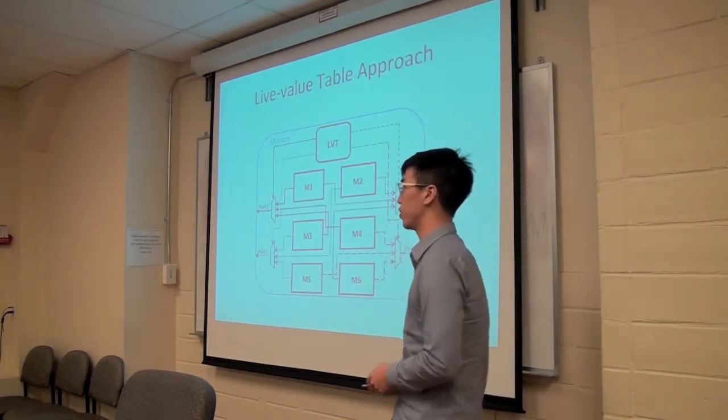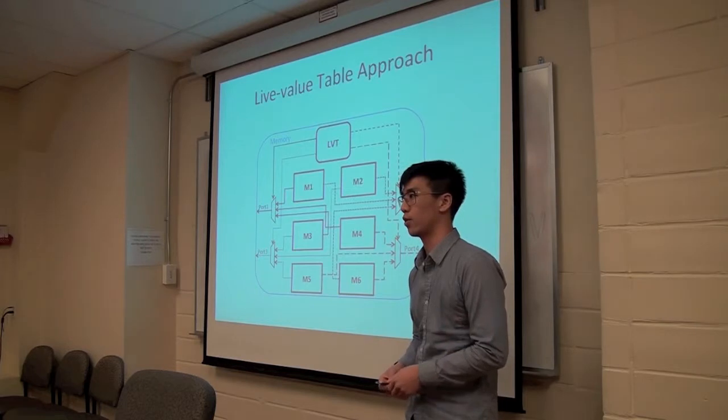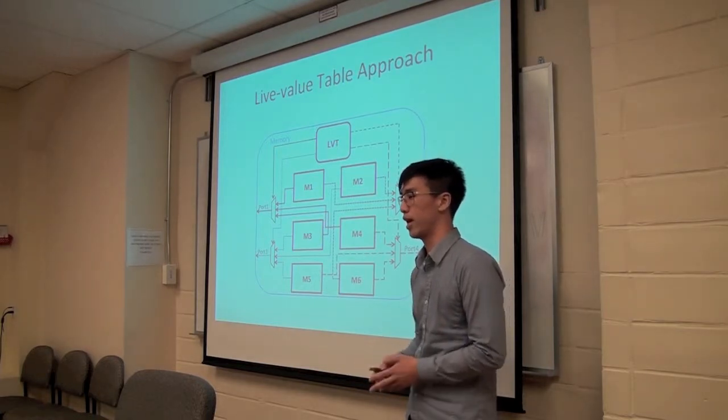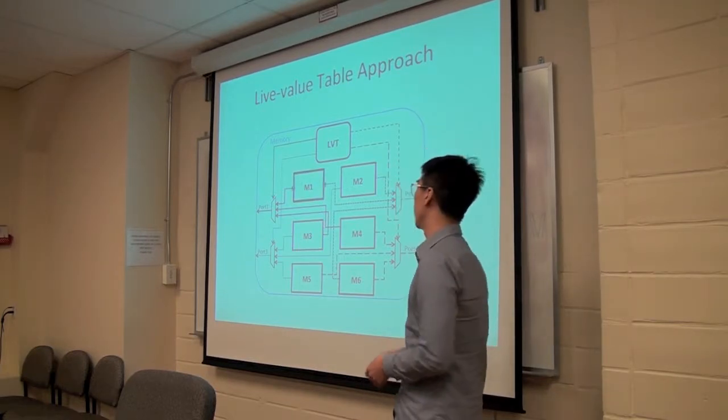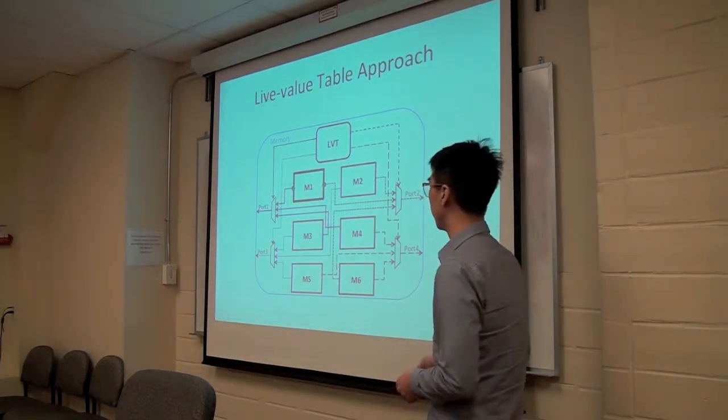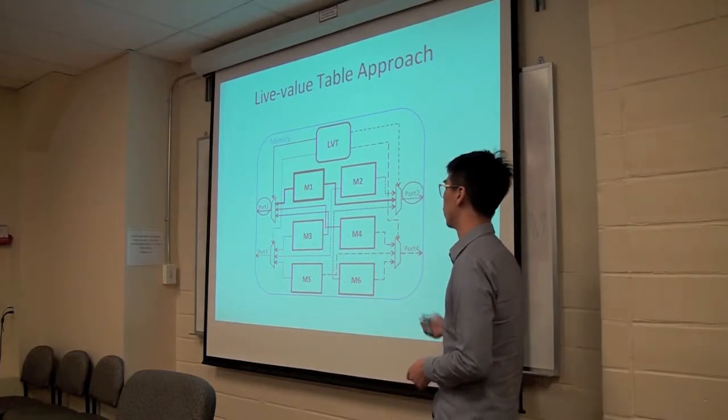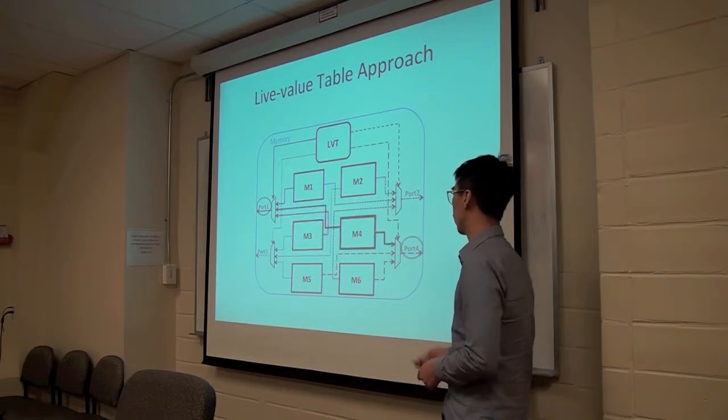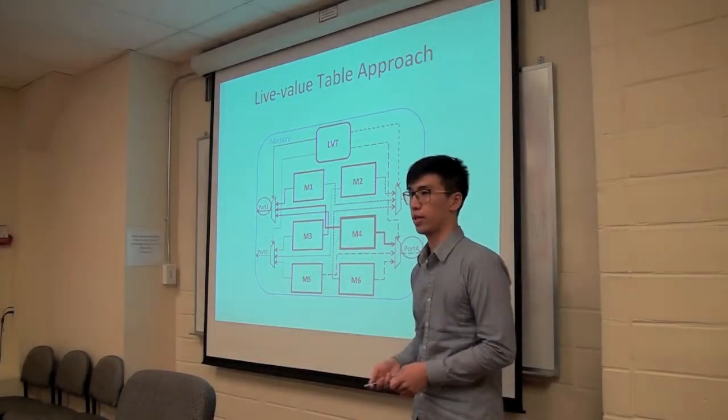So let's look at how the first multi-ported cache works. So this was based on the live value table approach but we actually modified it according to our needs and in implementing this as a cache we were able to reduce the memory consumption to less than half of the original work which I can talk about more later if anyone has more questions on that. So each one of these memory blocks is a true dual port memory so that each port can do either read or write. And the idea is that each port has to connect to each other port through one block of memory. So you see here that port 1 connects to port 2 through M1, port 1 connects to port 3 through M3, and port 1 connects to port 4 through M4. This enables any data that is written by port 1 to be readable by all other ports and vice versa.